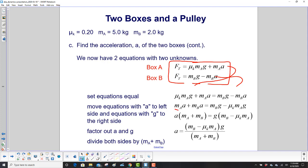And the next step will be to factor out an a. On the left side, so we have a times m sub a plus m sub b. On the left side, we factor out a g. So we have m sub b minus mu k m sub a. One last step. Divide both sides by m sub a plus m sub b so we totally isolate a. And here is our answer.